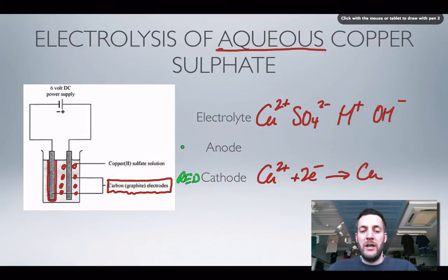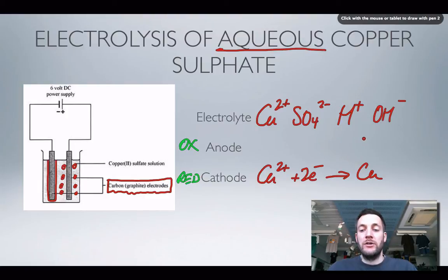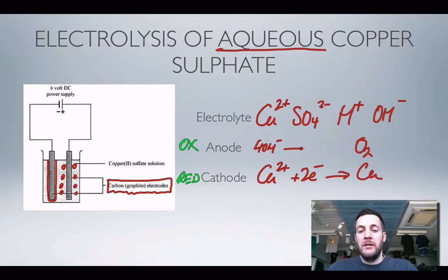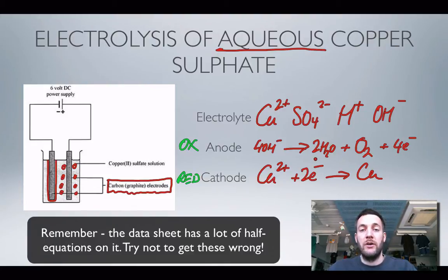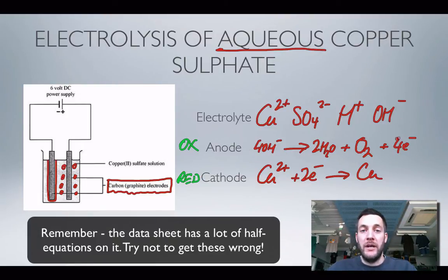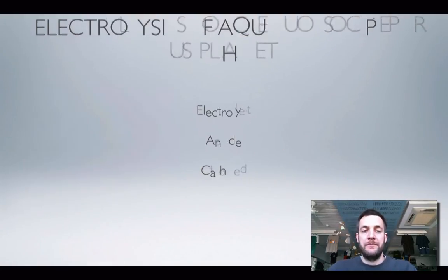At the anode, oxidation happens. We produced bubbles of a colorless gas that relit a glowing splint, which tells us oxygen formed. Oxygen can't form from a sulfate ion, but looking at the data sheet there is the half equation: 4OH- → 2H2O + O2 + 4e-. So by using our observations, we decided that the hydroxide ion was giving up electrons and forming oxygen, not the sulfate ion. These two half equations could be combined to give an overall equation.